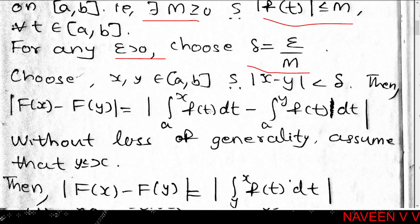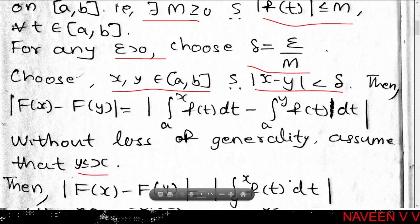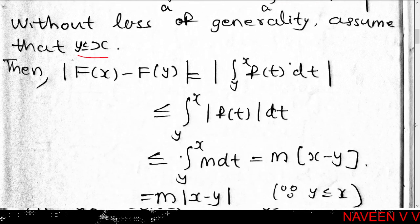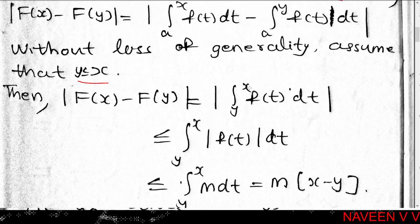Now, for x and y in [a,b] with |x - y| < delta, without loss of generality assume y ≤ x. Then by definition, |F(x) - F(y)| equals the modulus of the integral from a to x of f(t) dt minus the integral from a to y of f(t) dt. Applying the additive property of definite integrals, this equals the modulus of the integral from y to x of f(t) dt.